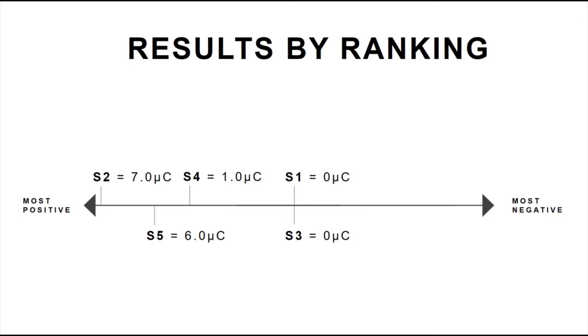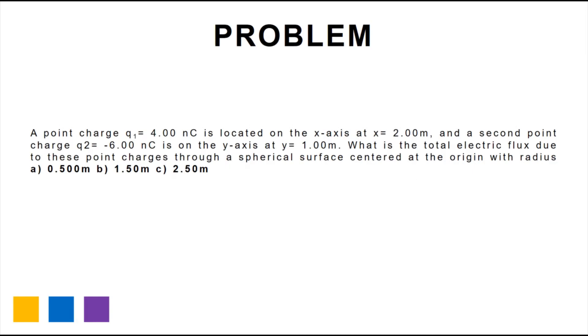For problem 2, a point charge, Q1, is equal to 4 µC and is located on the x-axis at x equals 2 meters. And the second point charge, Q2, is equal to 6 µC and is located on the y-axis at y equals 1 meter. What is the total electric flux due to these point charges through a spherical surface centered at the origin with the following radius?